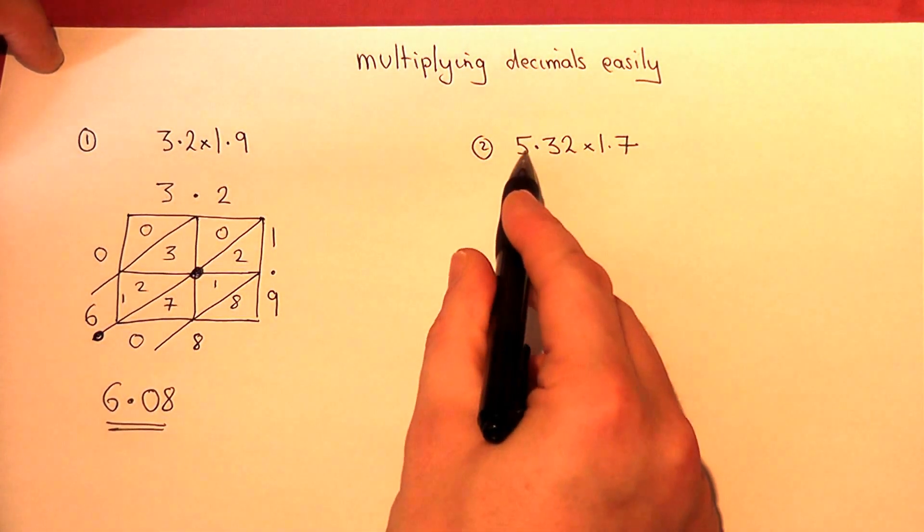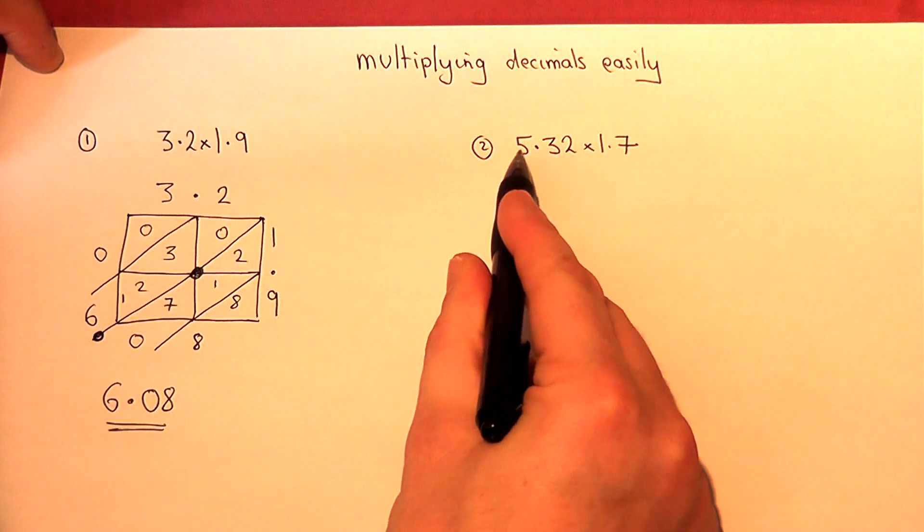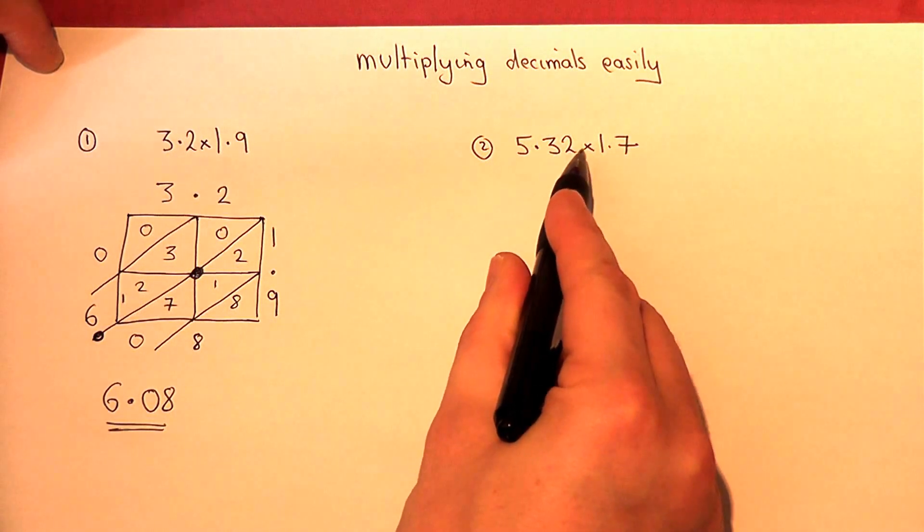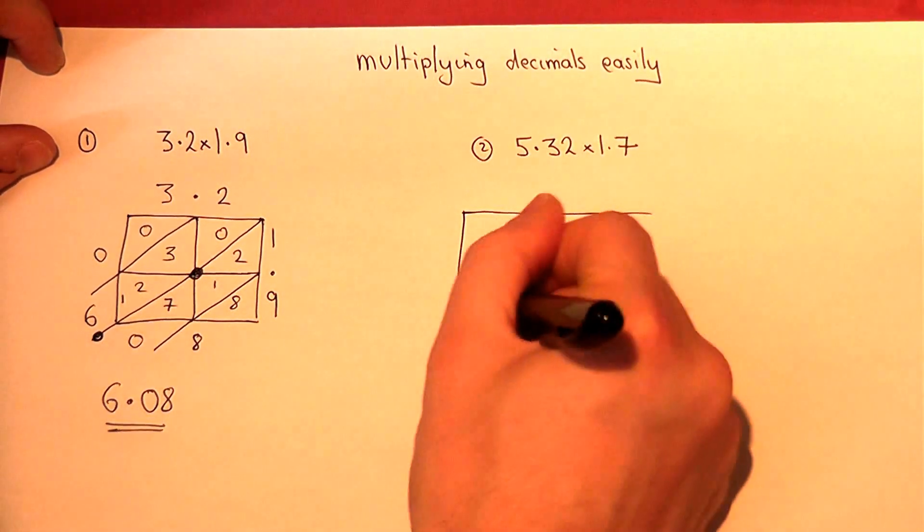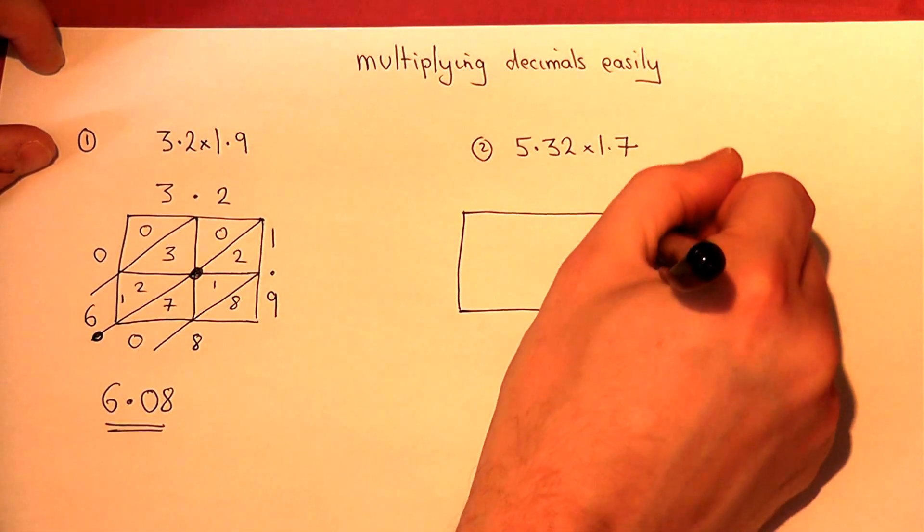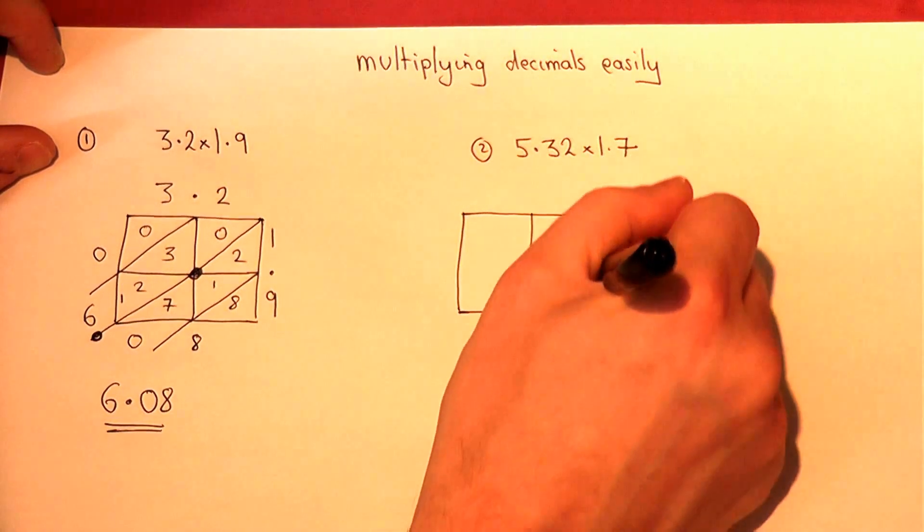The second one has a three-digit number. 5.32 times 1.7. So, I extend the grid across to fit in the larger number.